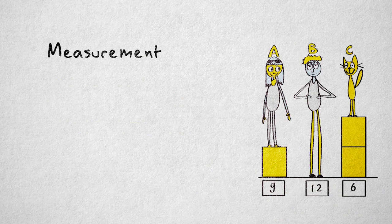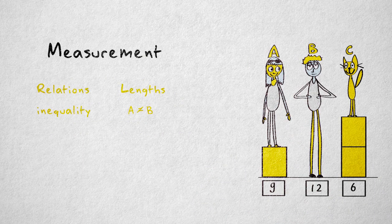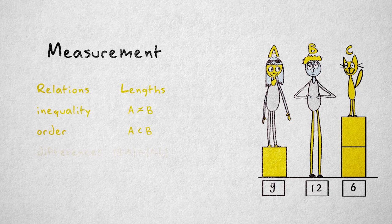Consider body length. For this property, we can distinguish different body lengths, we can order them, compare differences in body length, and even compare ratios.